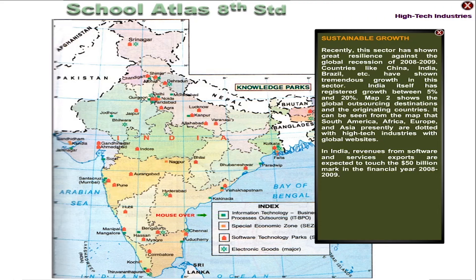Map 2 shows the global outsourcing destinations and originating countries. It can be seen from the map that South America, Africa, Europe and Asia are presently dotted with high-tech industries with global websites. In India, revenues from software and services exports are expected to touch the $50 billion mark in the financial year 2008-2009.